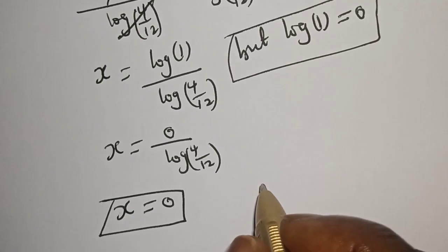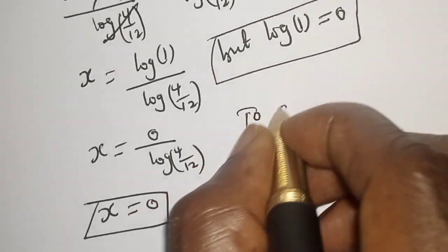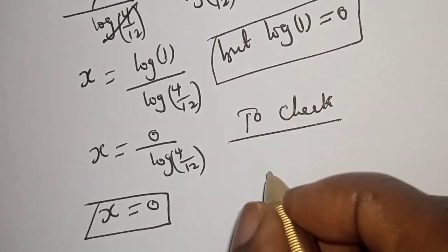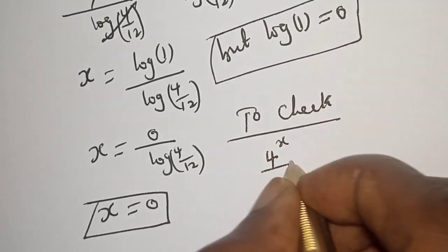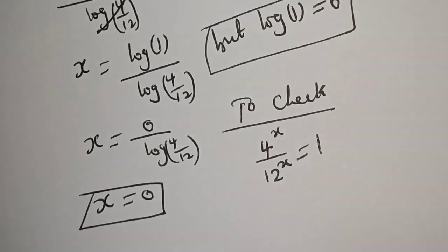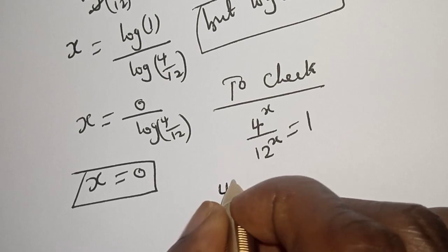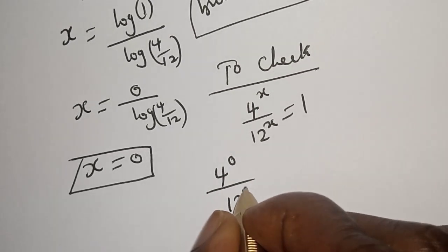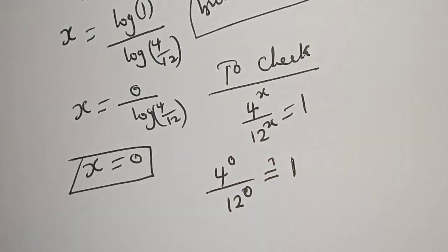We can check to confirm if our answer is right or wrong. Let's check. We have the given equation: 4 raised to power s divided by 12 raised to power s is equal to 1. When s is 0, this becomes 4 raised to power 0 divided by 12 raised to power 0, which must equal 1.